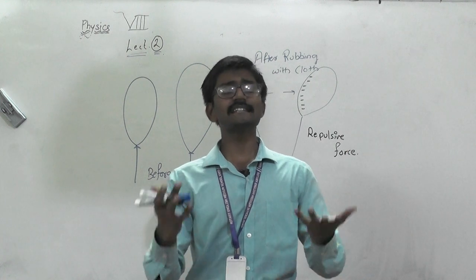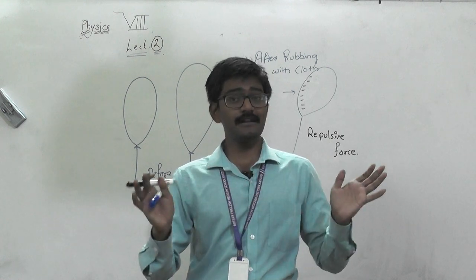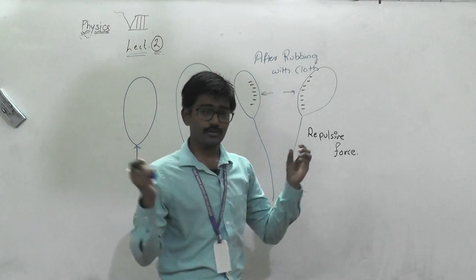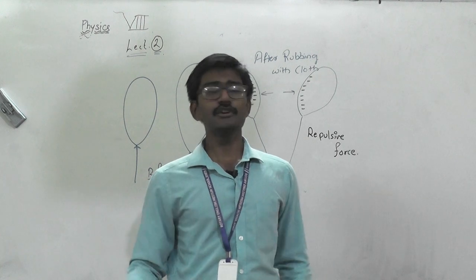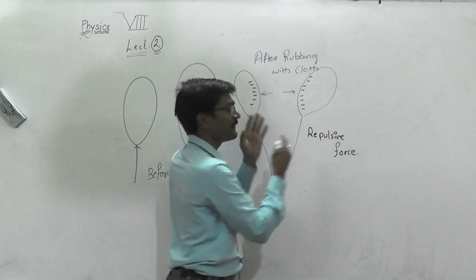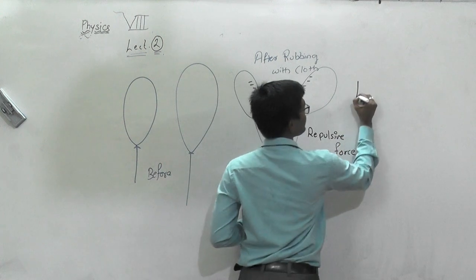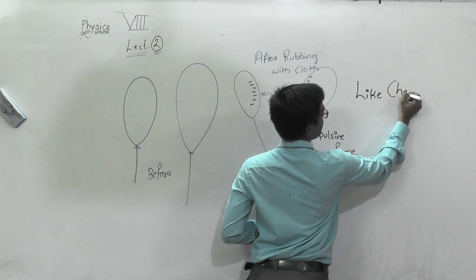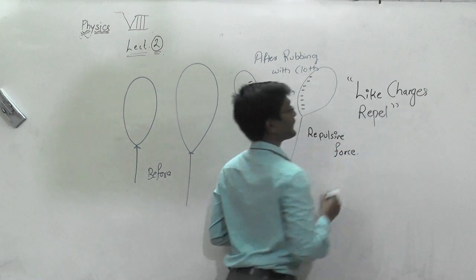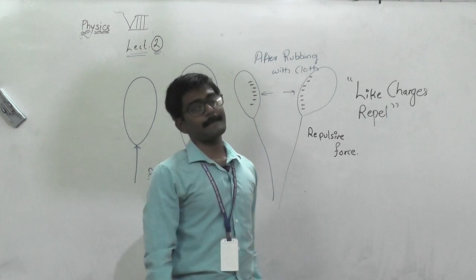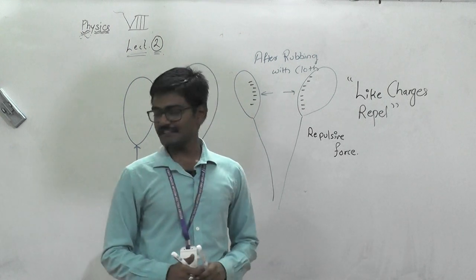Why do they move away? Because nature likes stability — stability means charges should be zero, everything should be relaxed. When two negative charges are brought towards each other, they are highly negative, not zero. But nature loves stability, so they move away from each other. When they move away, they tend to be more stable. That is why it is said that like charges repel.